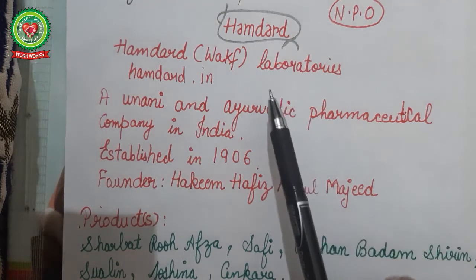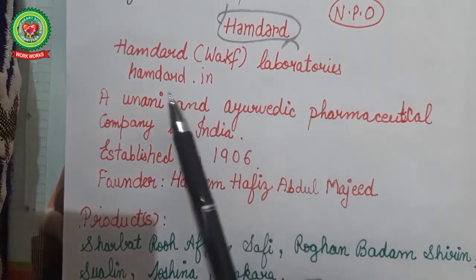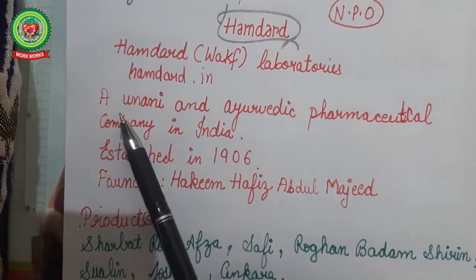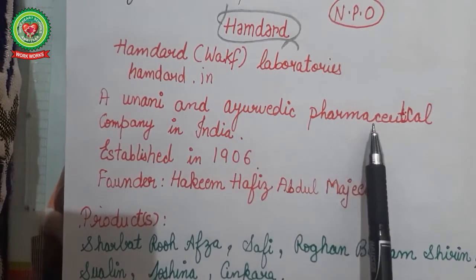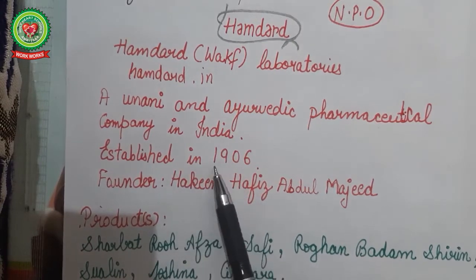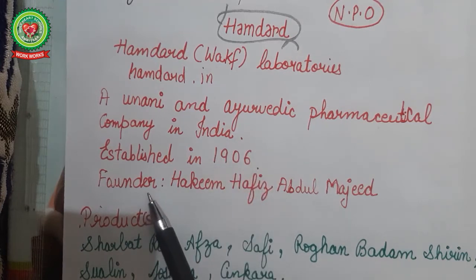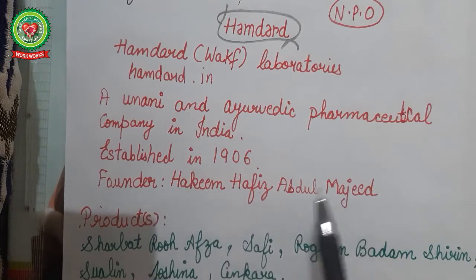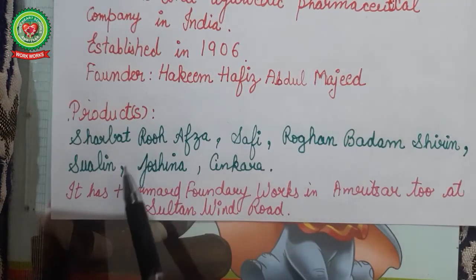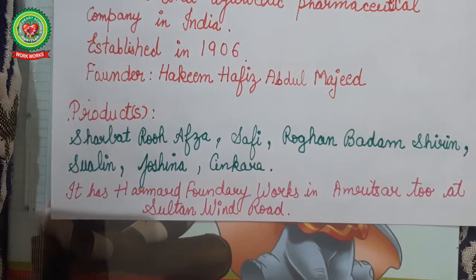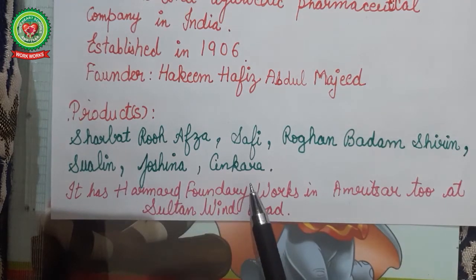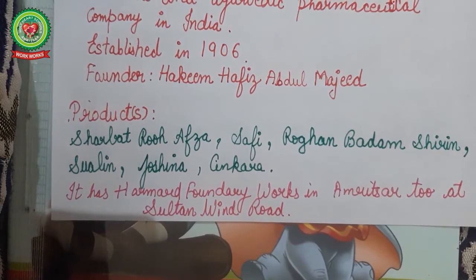Hamdard Wakf Laboratories can be found at hamdard.in. It's a Unani and Ayurvedic pharmaceutical company in India, established in 1906 during British rule by its founder Hakeem Hafiz Abdul Majeed. Products of Hamdard which we commonly use include Sharbat Rooh Afza, Safi, Roghan Badam Shirin, Sualin, and Joshina. These are the products manufactured by this company, and its production units in different cities are called Hamdard Foundry Works, including one in Amritsar at Sultanwind Road.